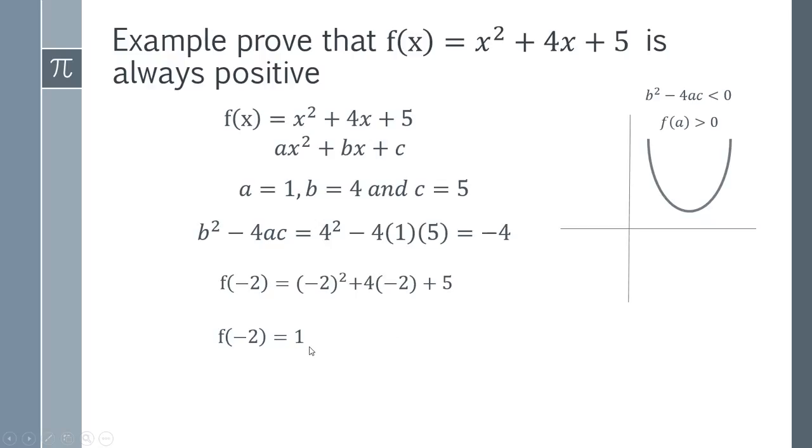Evaluate that and we get the case that f of minus 2 is 1. So we've shown that for one value it is positive. So it can't possibly be this one down here. You could never have a value of plus 1 on that graph. So it must be this case. Therefore we have shown this condition and we've shown this condition. So it must be true that this function is always positive.